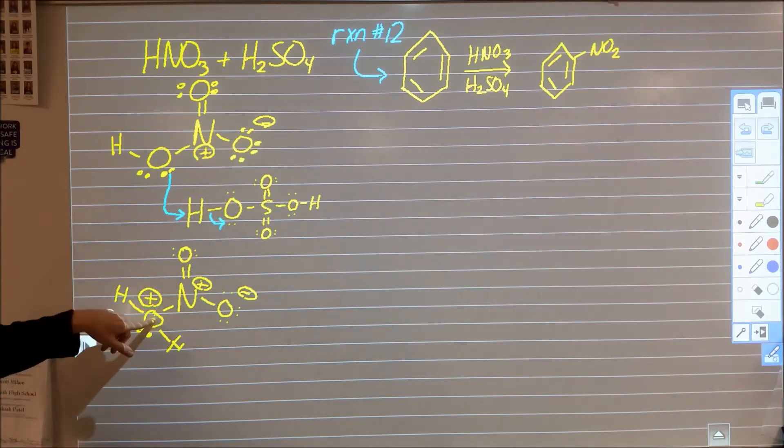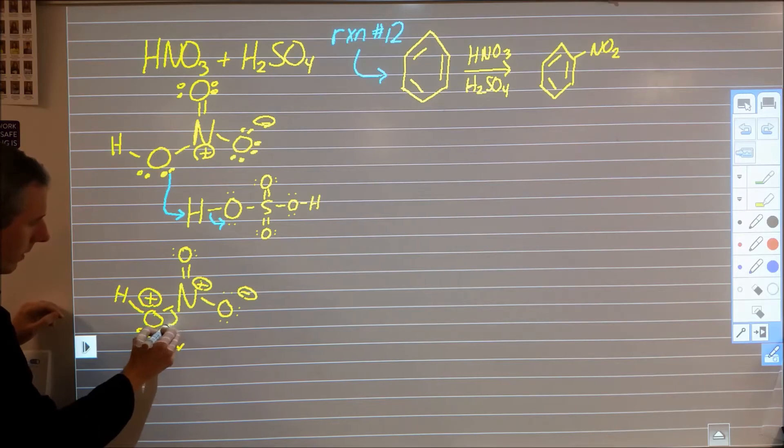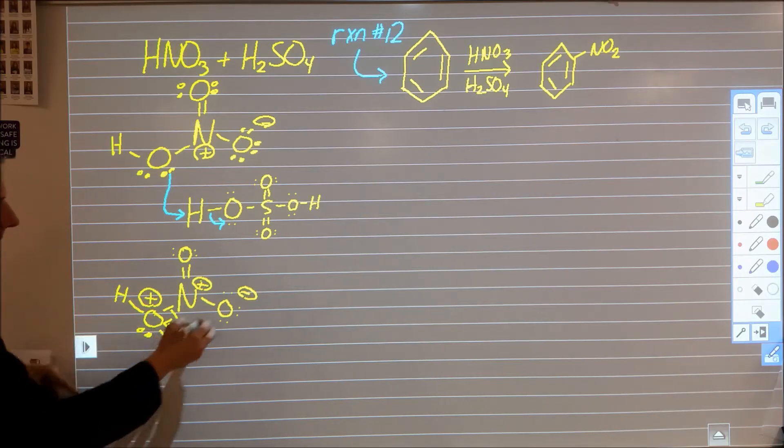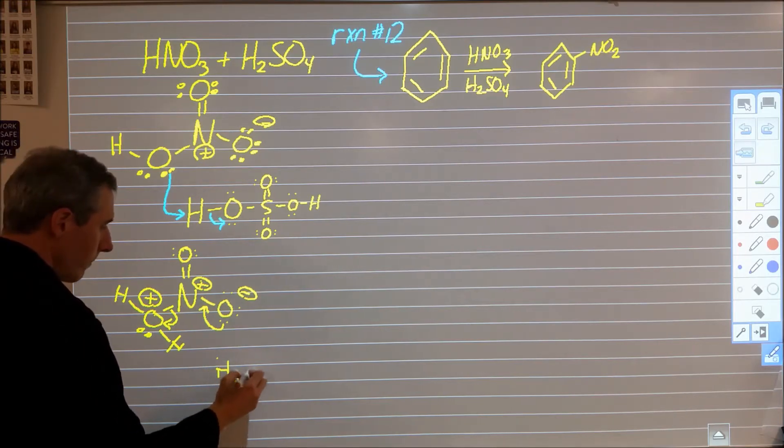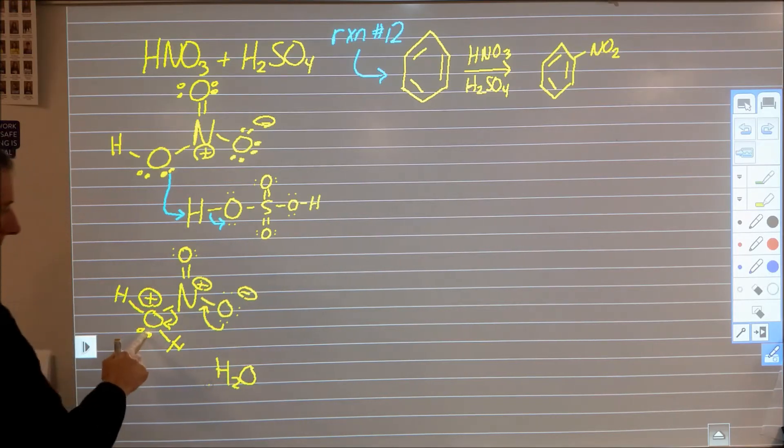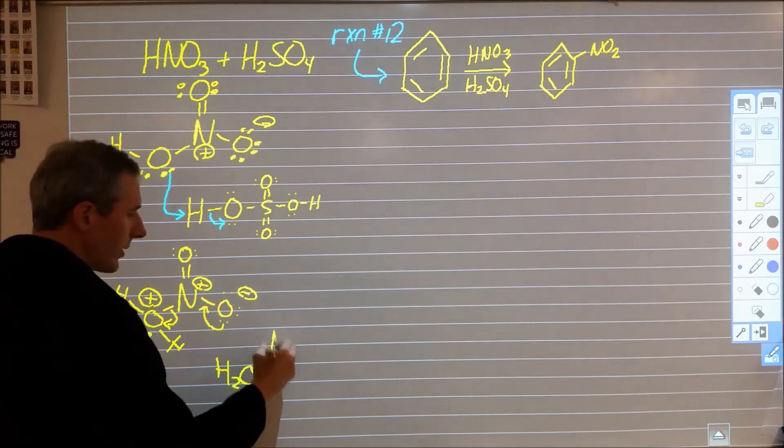And then what can happen is this bond can break where those electrons return to here and then this can reform a double bond here producing two different things. We get a water molecule from this H2O and then we form an NO2+.